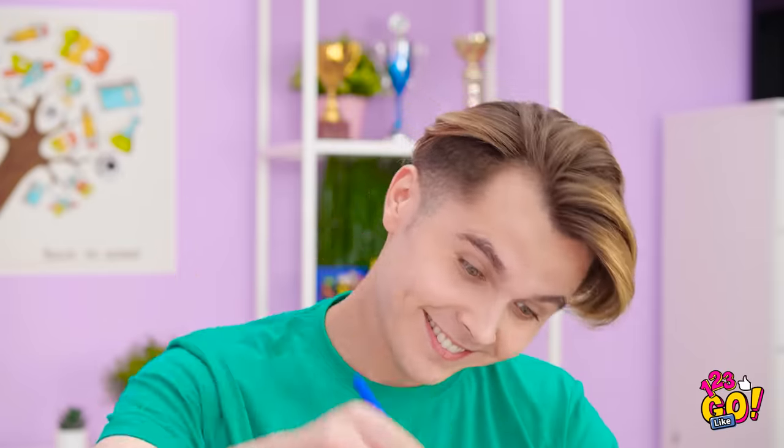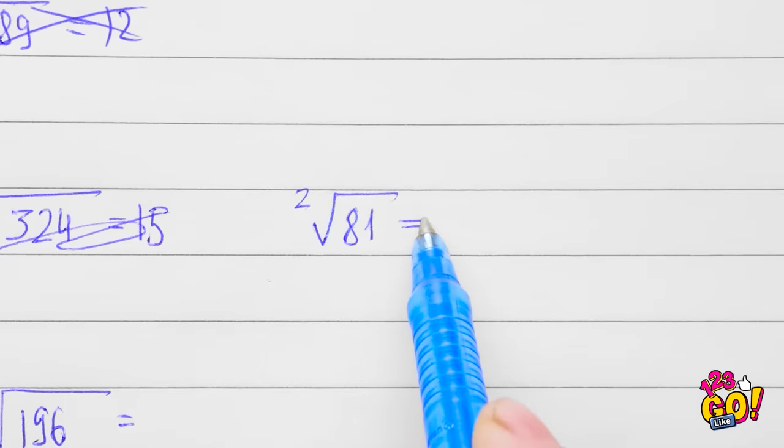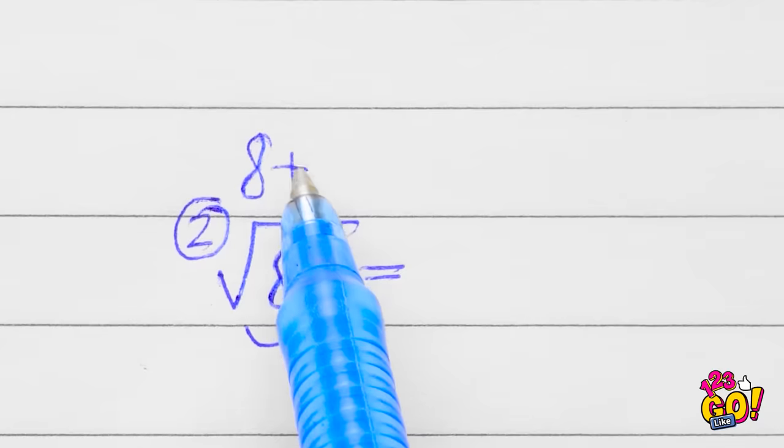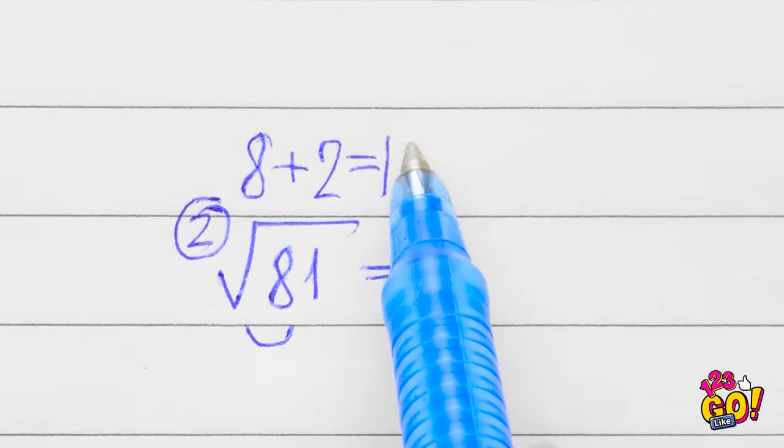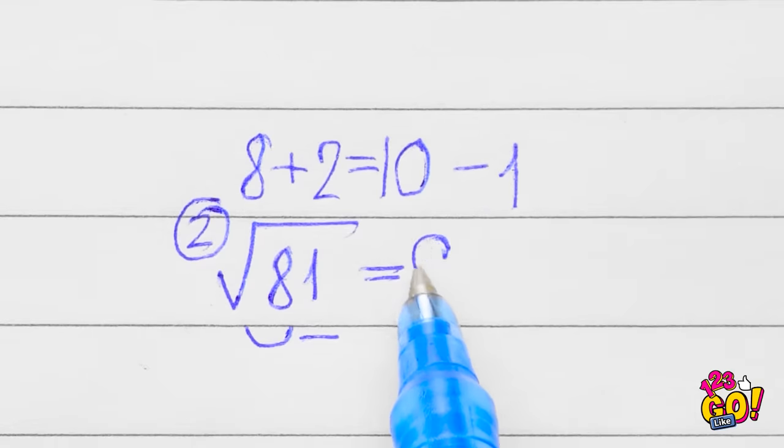Who needs a calculator, right? So if I want to find the square root of 81. First I add 8 and 2. That gives me 8. Then subtract it by 1. 9. What's the last thing? Thanks, Kate!